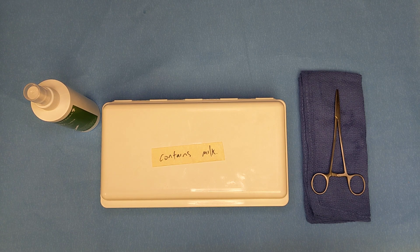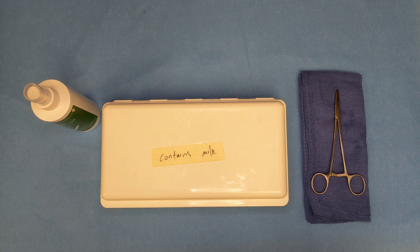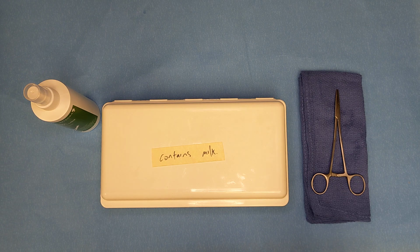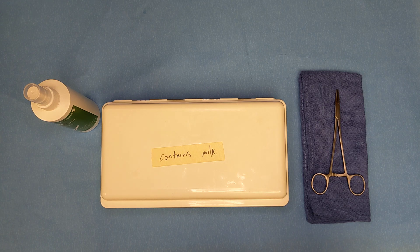Today we're going to learn how to manually lubricate an instrument. Instrument lubrication, sometimes called instrument milk because of its white color, is applied to instruments with moving parts to ensure their ongoing function and reduce wear and tear over time.